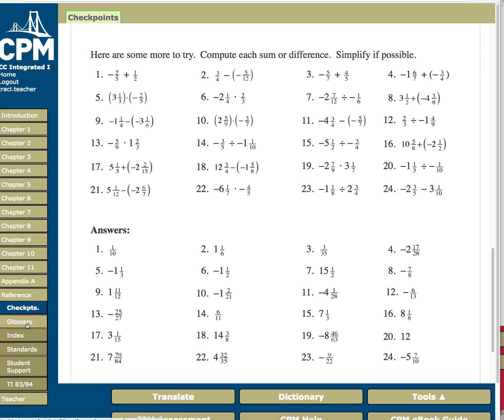Also under reference, you have a glossary if you need to look some things up. And also an index if you need to find something within the book. So this is a broad overview on how to use the online book. It's very useful, easy to get around to different places. And we will be using it quite a bit in class.